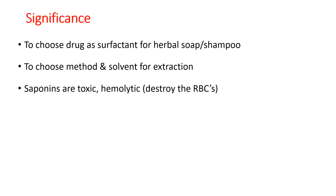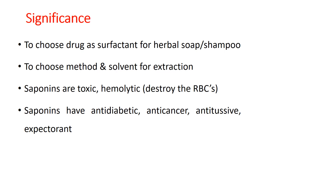These saponins, if consumed in higher concentration, are toxic — they are hemolytic and can destroy RBCs, so a person or even pets may die. It has been reported that high foaming index drugs, if mixed with water bodies, can cause fish and water animals to die due to heavy contamination by saponins. However, saponins in low concentration have anti-diabetic, anti-cancerous, anti-tussive, or expectorant properties. For example, licorice is an expectorant and ginger is an anti-tussive; both have saponins in moderate concentration.